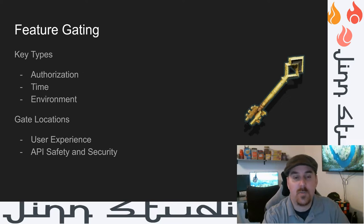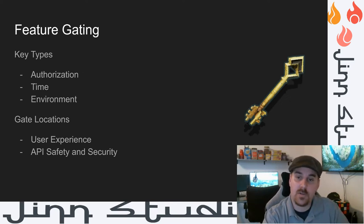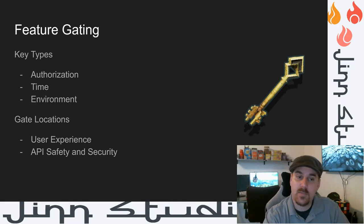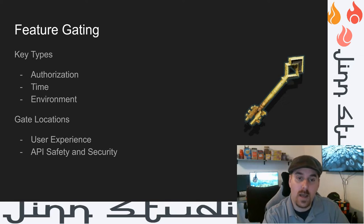Feature gating is an integral part of any system. There are three types of feature gates: authorization, time, and environment. Just like input validation, feature gating happens in each layer for its own reasons, but there are typically two main locations: one is in the UI for user experience, and the other is on the API for safety and security.